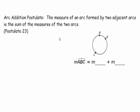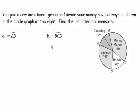Just as we have segment and angle addition postulates in geometry, we have an arc addition postulate. It states that the measure of an arc formed by two adjacent arcs is the sum of their measures: arc ABC = arc AB + arc BC. Using the circle graph, find the measure of arc BD and arc BCD. Come back and check your answers — hit pause now.